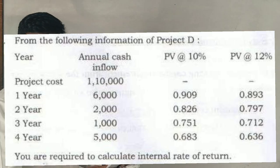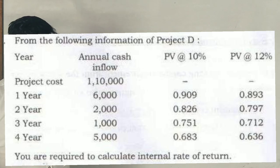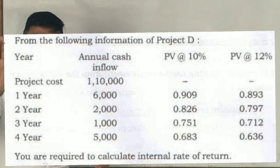We have one more problem, okay? One more question. Just I will read out that question. From the following information of product B, year 1 to 4 years is given, annual cash inflow. See, annual cash inflow, direct cash inflow. Profit before depreciation, tax, etc. All process is done. What is the case? Cash inflow is given.